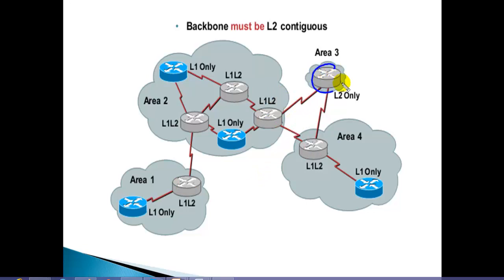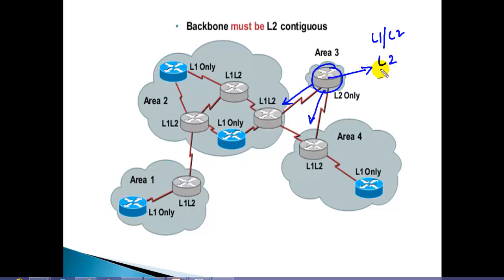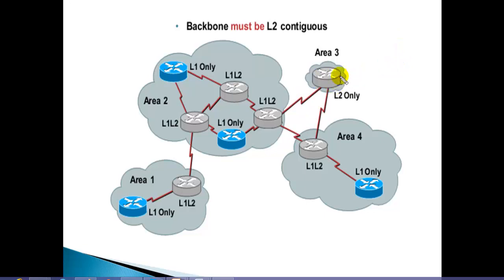For this Area 3 router, it can be configured as Level 2 or Level 1/Level 2, because it is only exchanging routes with other routers in different areas and there is no internal router connecting to it. In this type of scenario, it is recommended to use just Level 2 to minimize the size of the database, since this router will only maintain a Level 2 database.